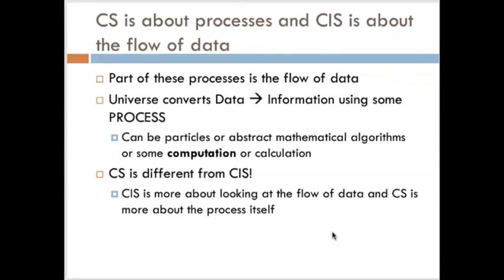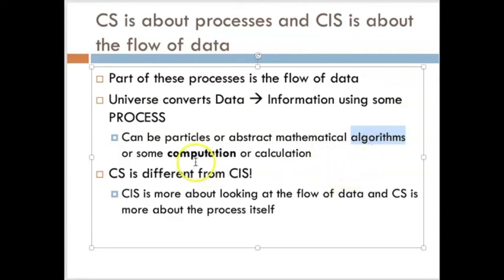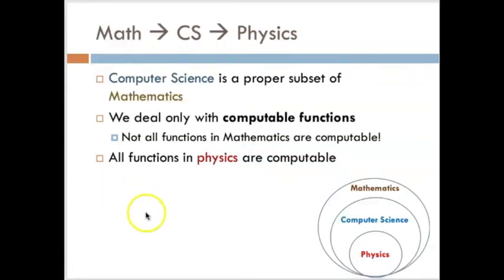And computer information systems as being more about the flow of data and the curation of that data and the management of that data and the underlying systems that actually transform that data. So that flow of data is a part of the processes that you have. And it turns out the universe itself tends to convert data into information using some process. That process can be the particles, the things that we call the leptons or the quarks or the intermediate gauge bosons. Or it can be some abstract mathematical function, the values of which we can compute by some step-by-step process that we call an algorithm.